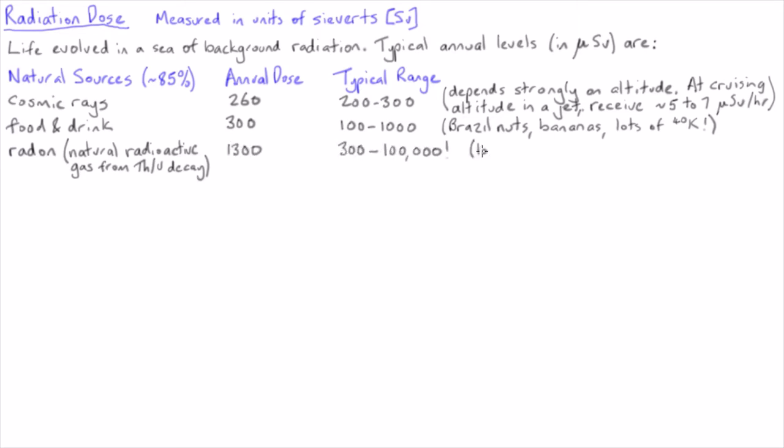Depending on the concentration of uranium and thorium in the underlying rock, as well as the ventilation properties of your house, the radiation dose received from radon can vary by many orders of magnitude.